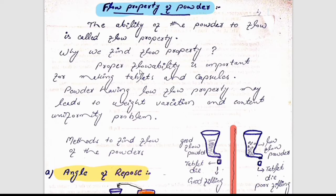Flow property is very much important for making tablets and capsules, so it is very much important to check the powder flow property before going to make the tablet or capsule. Powder having low flow property may lead to weight variation and content uniformity problems.